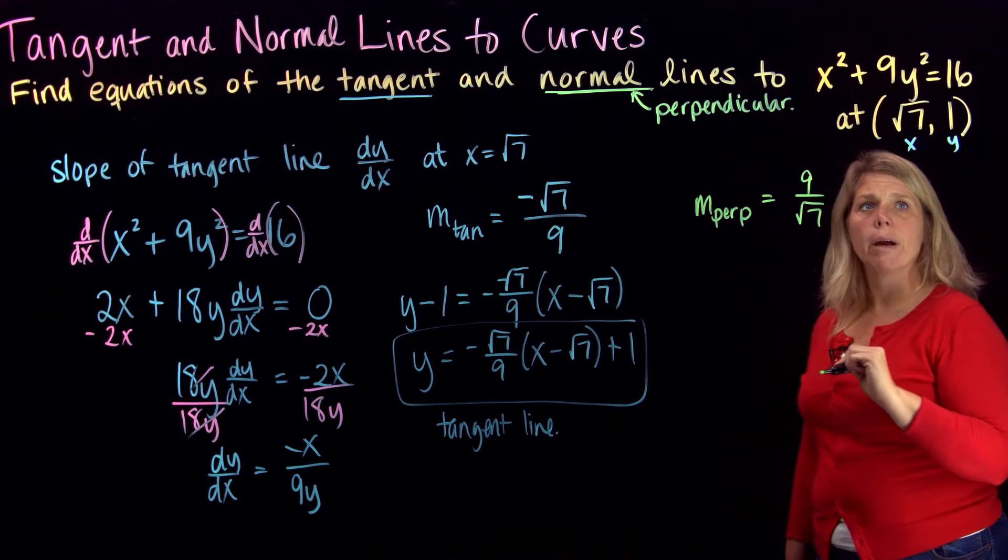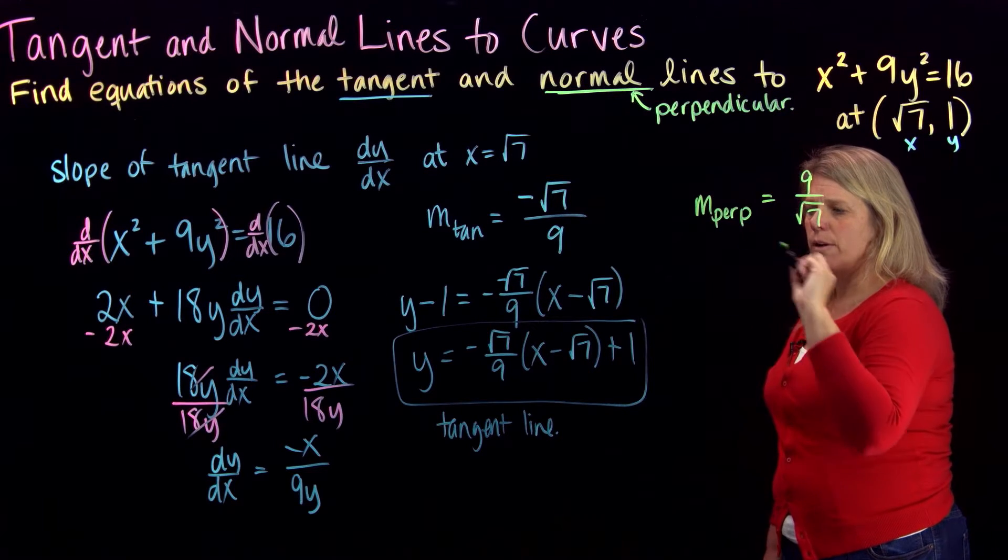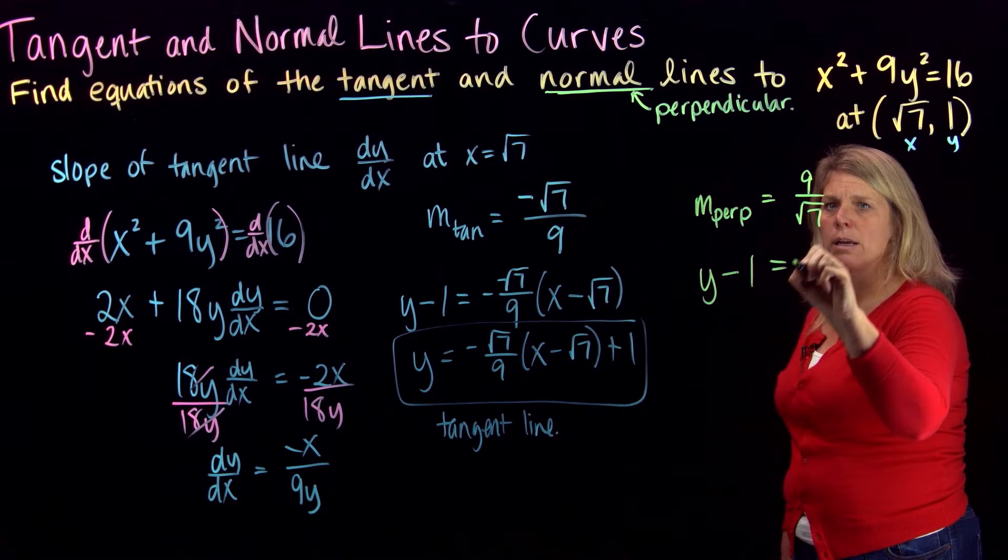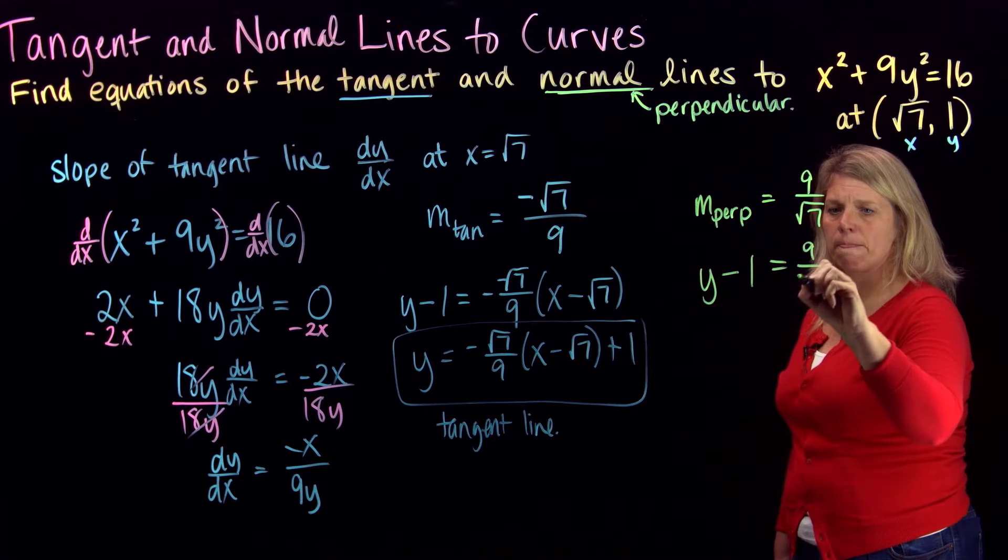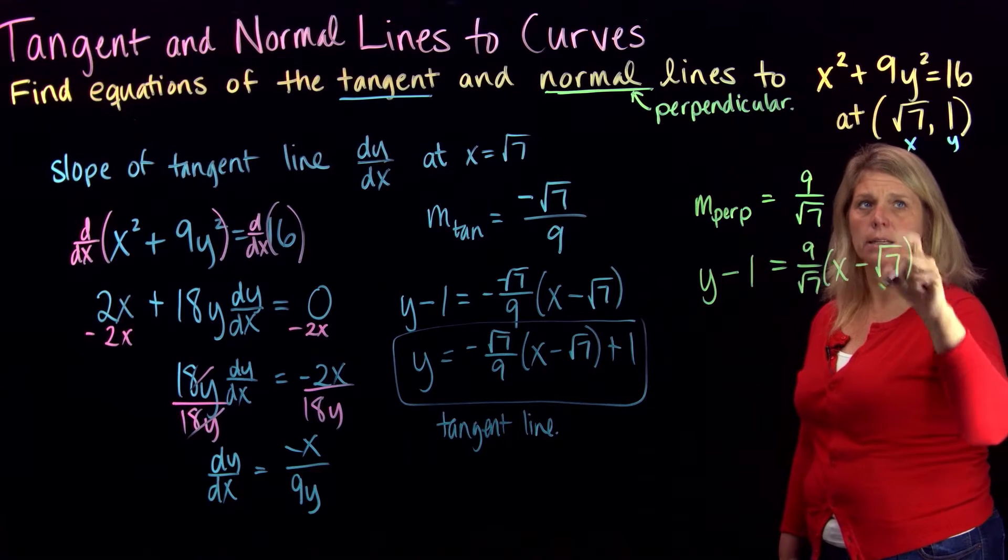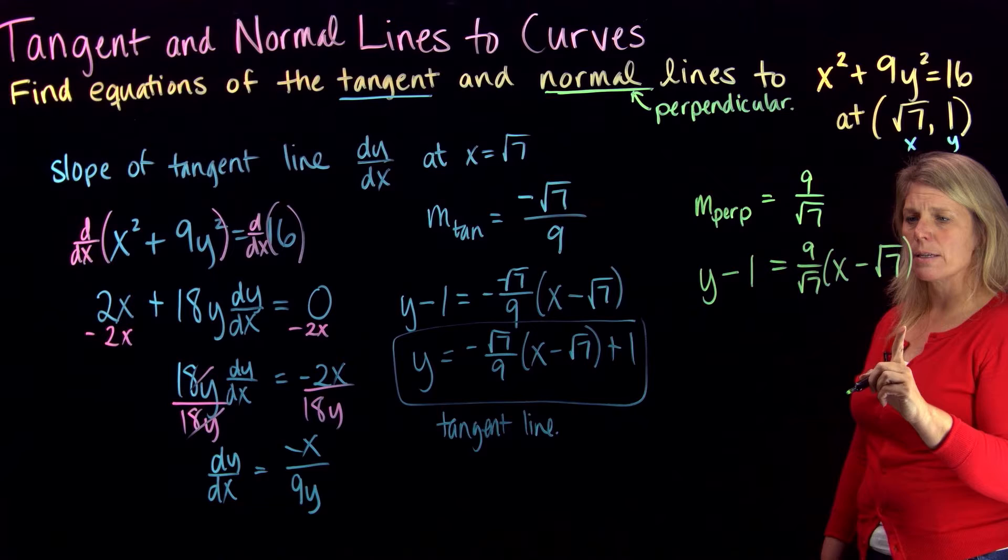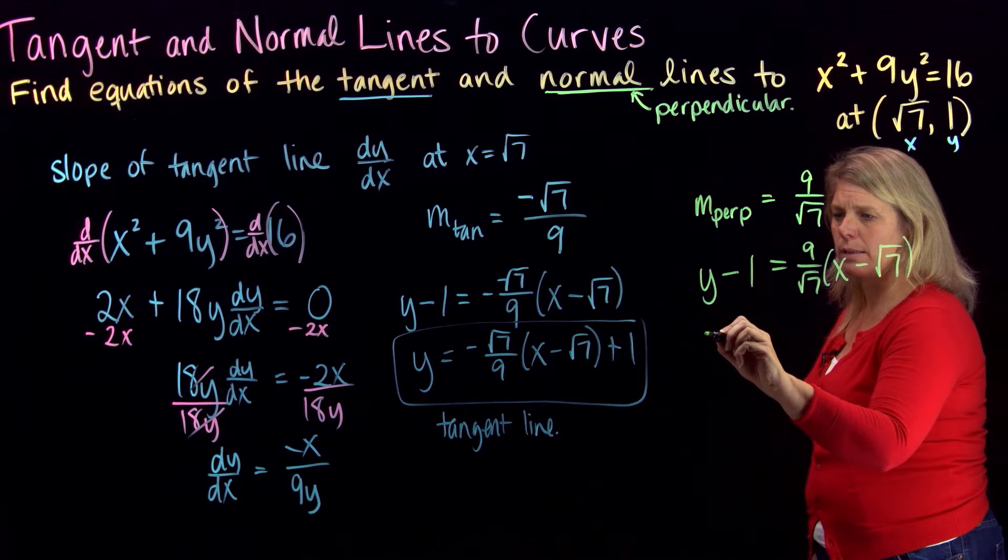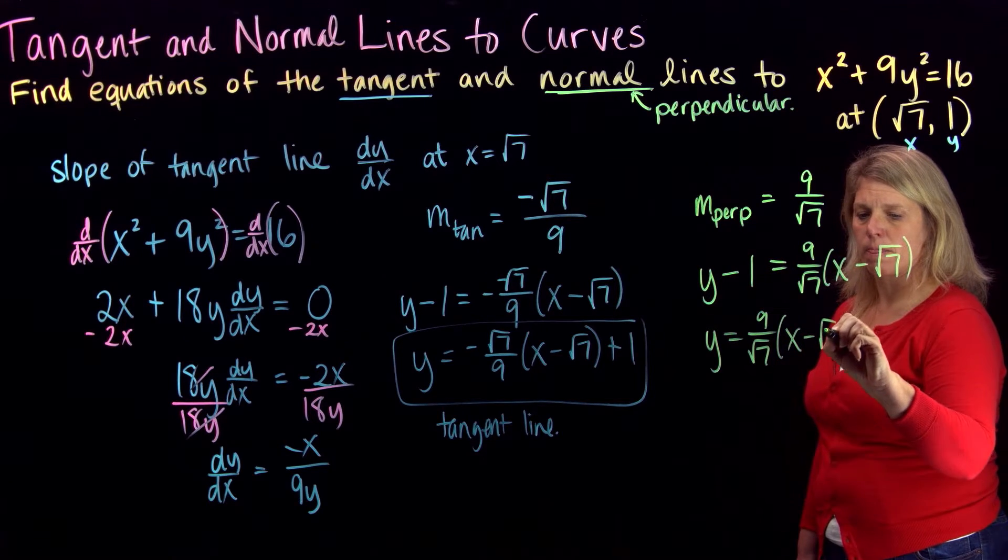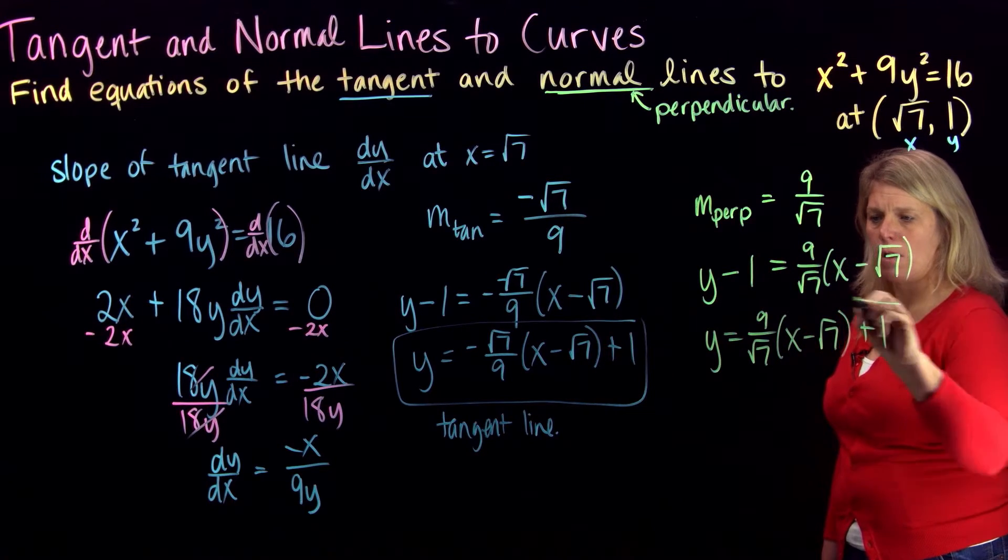We'll have the same point that we're using, just a different slope here. So for the equation of the normal line, I'll have y minus y1 equals m times the quantity x minus x1. And then if I want to solve for y, I can add 1 to both sides. Okay.